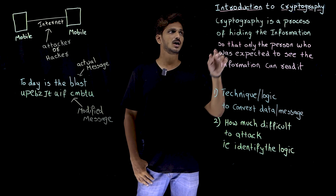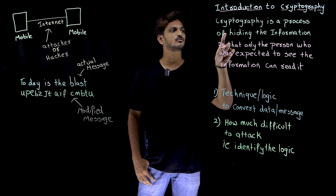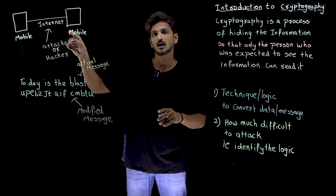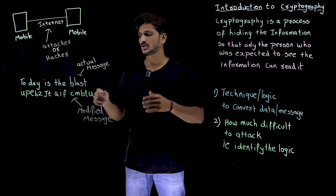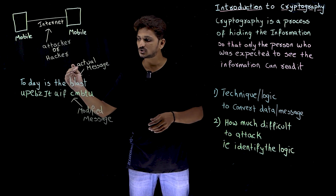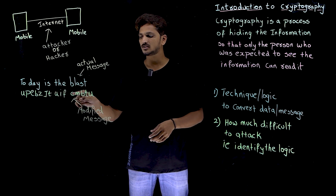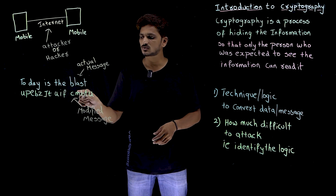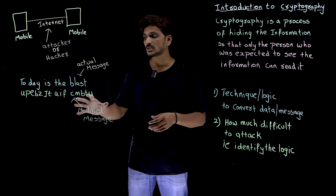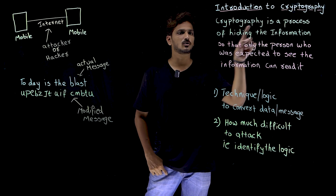Now coming to the definition of cryptography. Cryptography is a process — we are going to divide this definition in two steps. The first step is: cryptography is a process of hiding the information. So the message 'today is the blast,' we should not send as it is in the internet. It means we need to hide the information. So instead of sending the actual message, we need some techniques — that is what our subject is. To hide the information, suppose instead of this actual message, if you send the below one, we modified the actual message. 'UPEB, ZJT' — like this, we modified the actual message. Instead of sending the actual message in the internet, we will send the modified message. So why are we modifying the message? So that the attackers or hackers are not able to understand the information. So cryptography is a process of hiding the information.